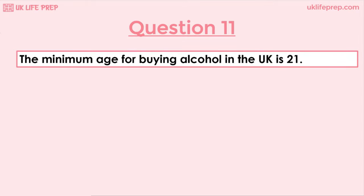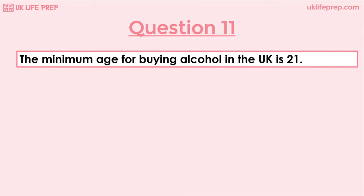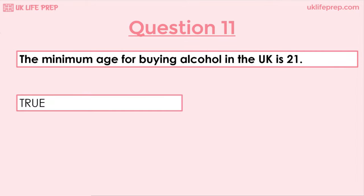Question 11: The minimum age for buying alcohol in the UK is 21, true or false? This statement is false. The correct age is 18.